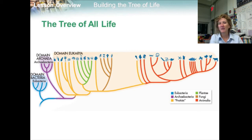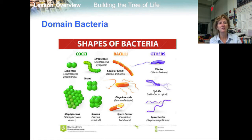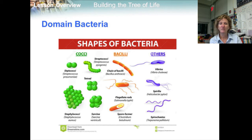Members of the domain Bacteria are unicellular and prokaryotic. This domain corresponds to the kingdom Eubacteria. Their cells have thick, rigid walls that surround a cell membrane and contain a substance known as peptidoglycan — a polymer consisting of sugars and amino acids that forms a mesh-like layer outside the plasma membrane of bacteria, forming the cell wall. These bacteria are ecologically diverse, ranging from free-living soil organisms to deadly parasites. Some photosynthesize while others do not; some need oxygen to survive while others are killed by oxygen.